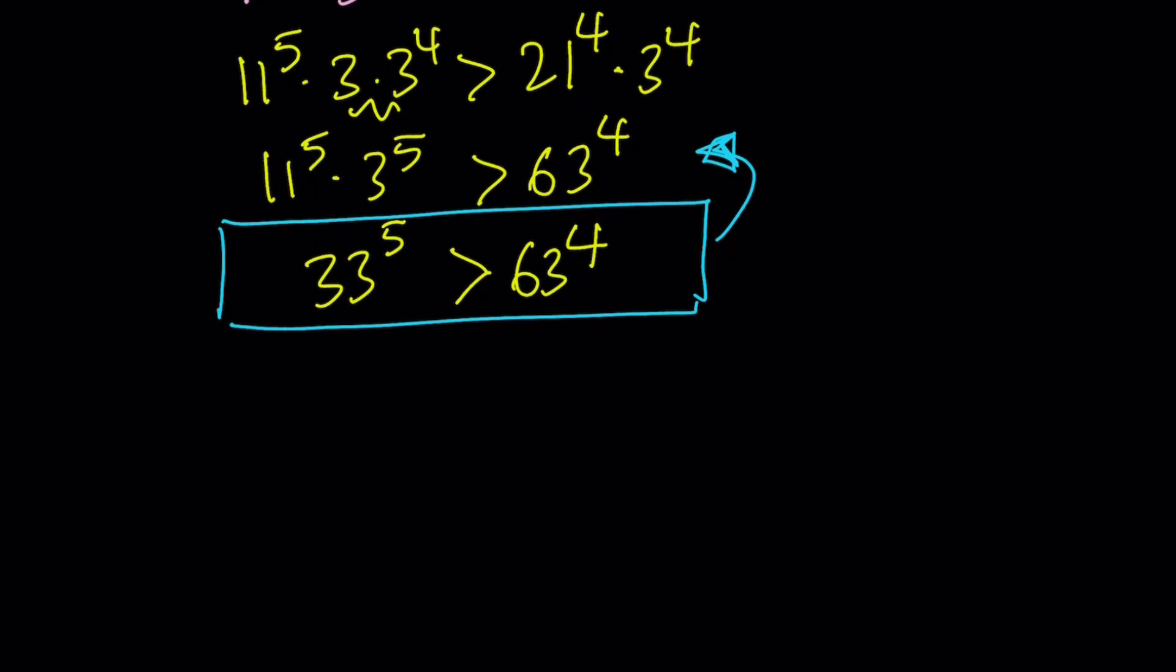I got the answer, but I told you that I was going to give you the numerical value. Let me give it to you real quick. Our larger number is 39,135,393, and my smaller number is 15,752,961. 961 happens to be 31 squared, but I don't think that's significant anyways.